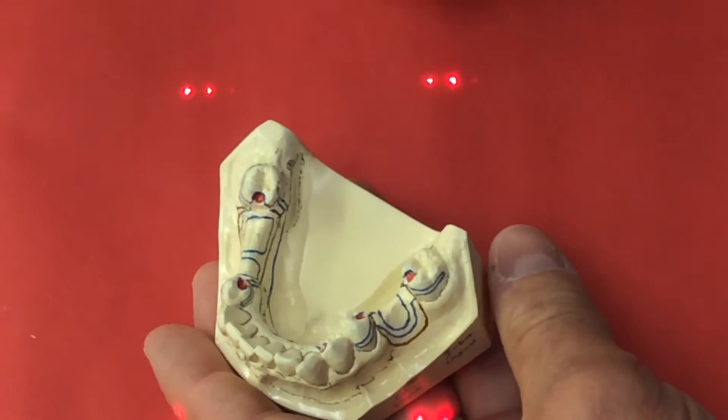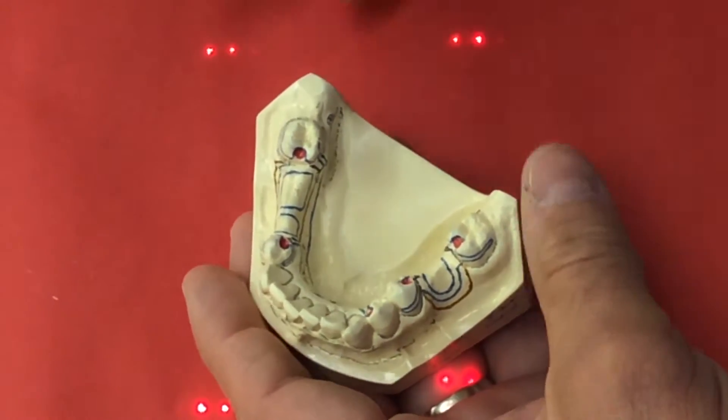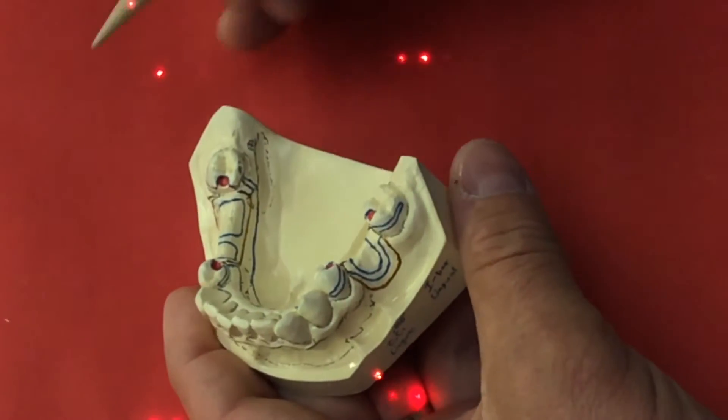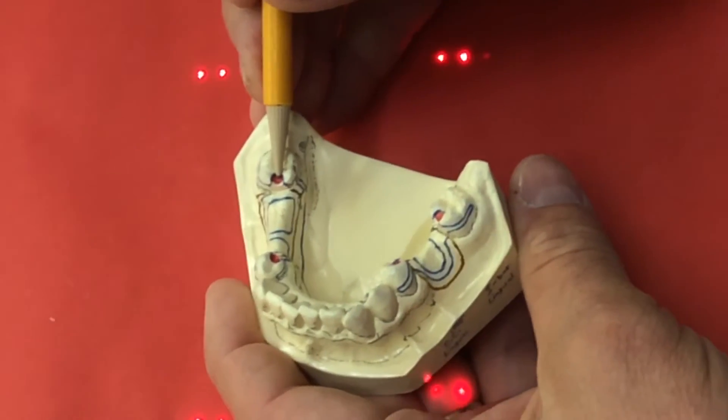The clasp will involve the retentive arm and a reciprocal arm. Back here, we've got the mesial occlusal rest.